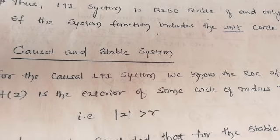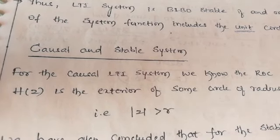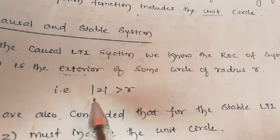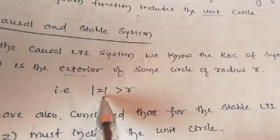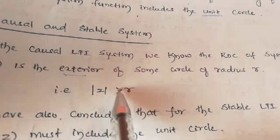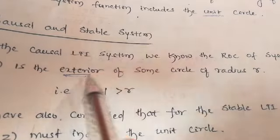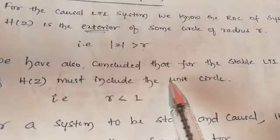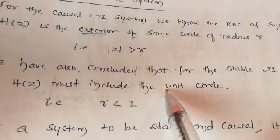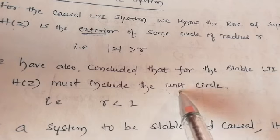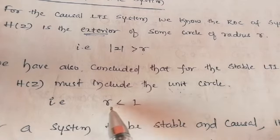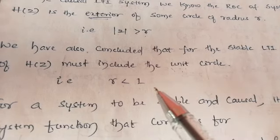Now combining both conditions for a causal and stable system: for the causal system, the ROC of H(z) is exterior or outside the circle of radius R, represented as |z| greater than R. For a stable LTI system, the ROC of H(z) must include the unit circle, meaning R must be less than 1, since the unit circle has radius 1.